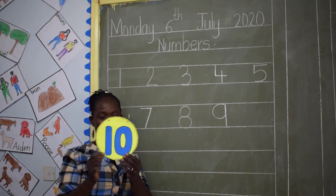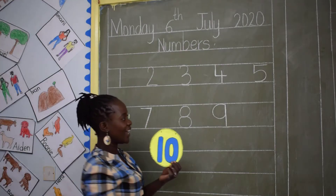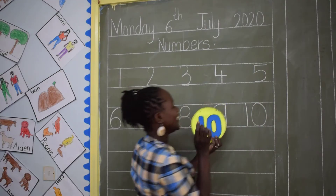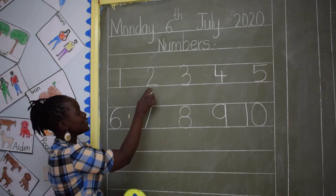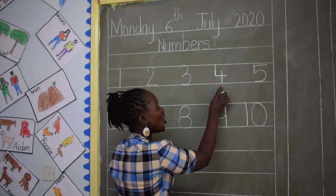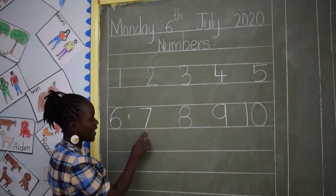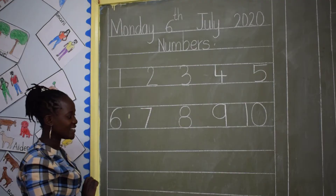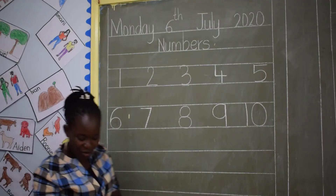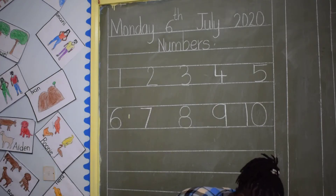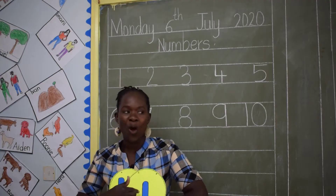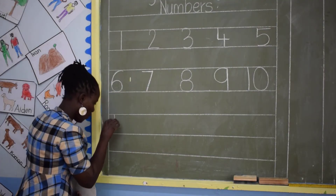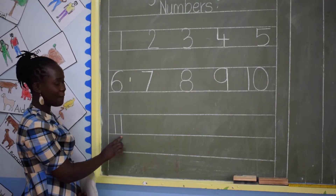Our next number is number 10. And here is number 10, children — a stick and a bowl. Let's write number 10: a stick and a bowl. Can we count again? 1, 2, 3, 4, 5, 6, 7, 8, 9, and 10. And today I want us to write number 11. How do we write number 11? Number 11 is 1 and 1. 1 and 1 makes 11. So let's write number 11: 1 and 1. This is number 11.